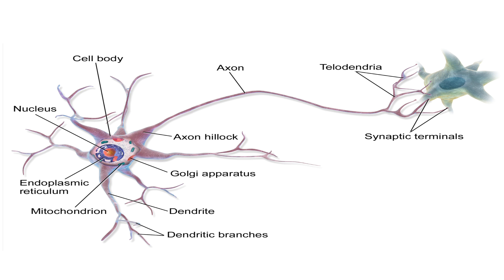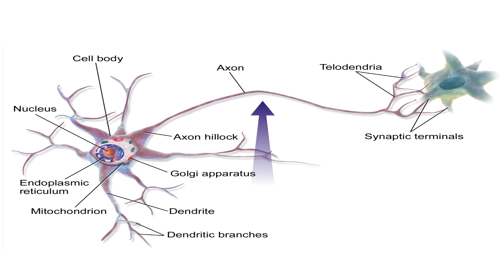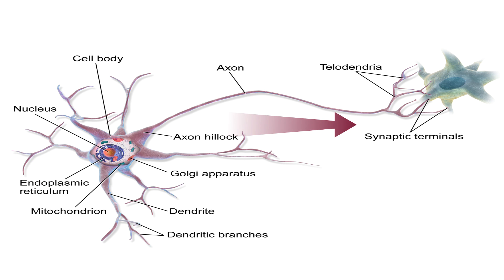Neurons are excitable cells, meaning they can produce and conduct current. They have many different sizes and shapes depending on their location, but all neurons have one cell body whose surface has projections called dendrites and a single long tubule called axon. Cell bodies are like normal cells with different subcellular organelles. Dendrites are neurites that conduct impulses to the cell body, and the axon conducts impulses away from the cell body.